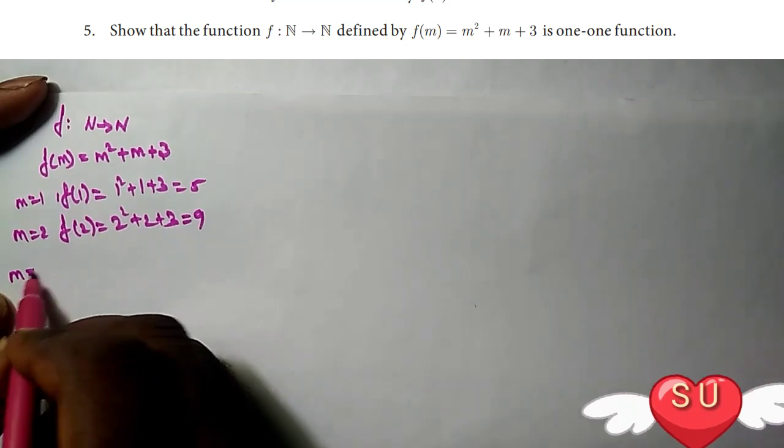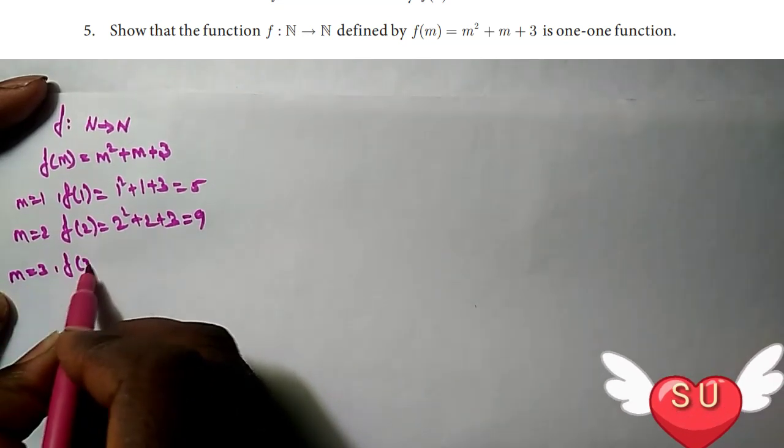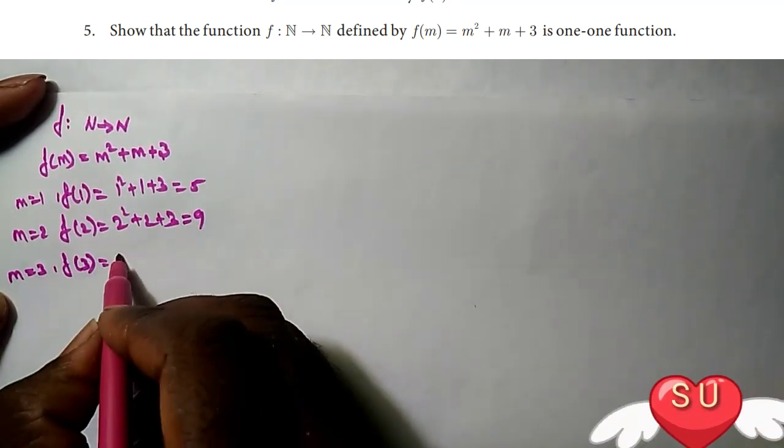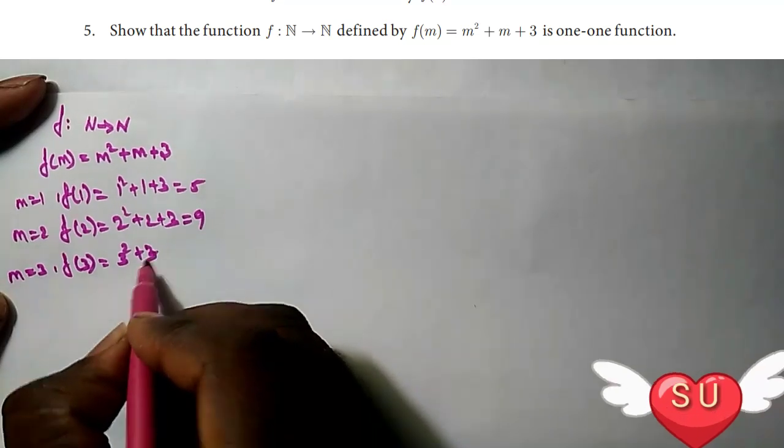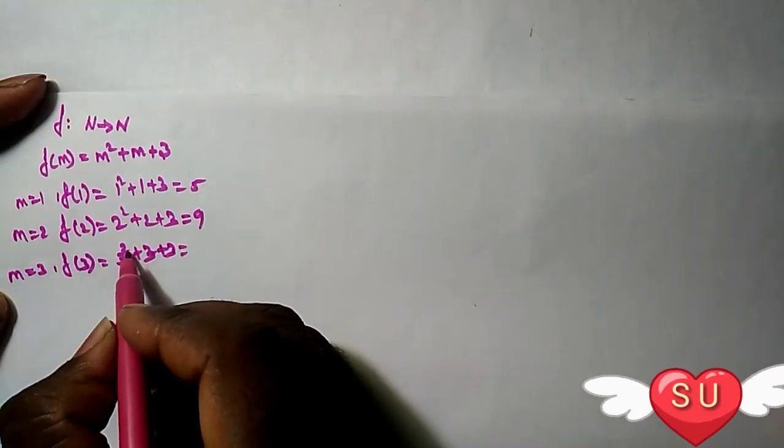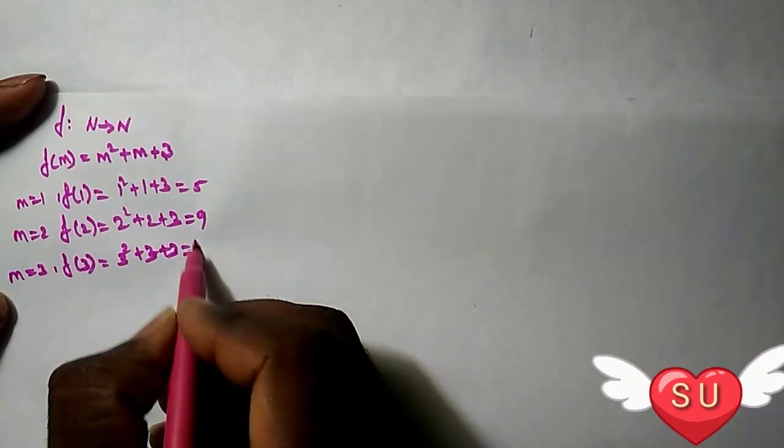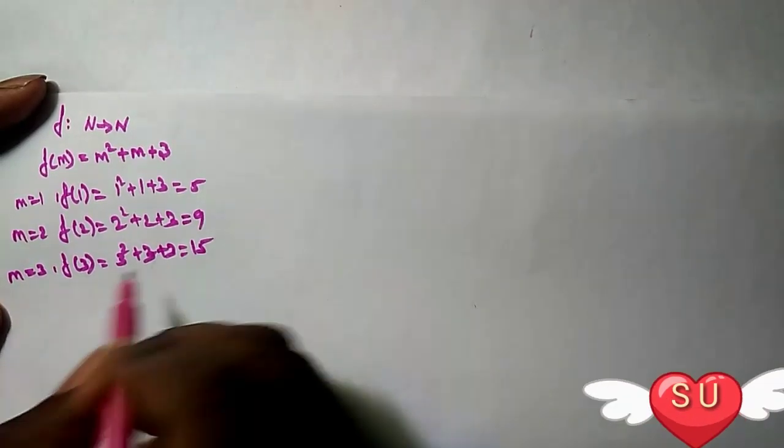Next m = 3. f(3) = 3² + 3 + 3 = 9 + 3 + 3 = 12 + 3 = 15.